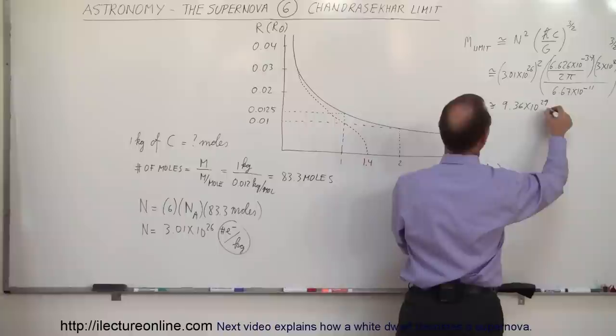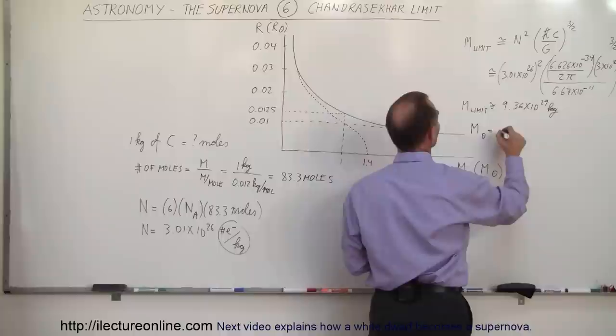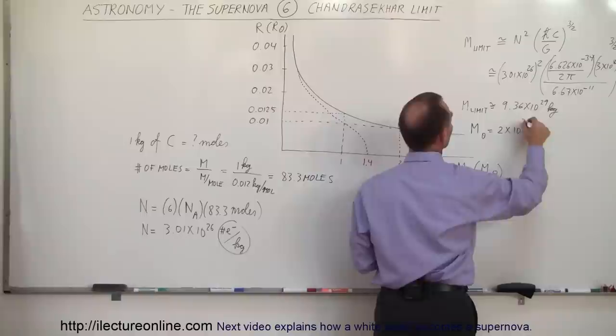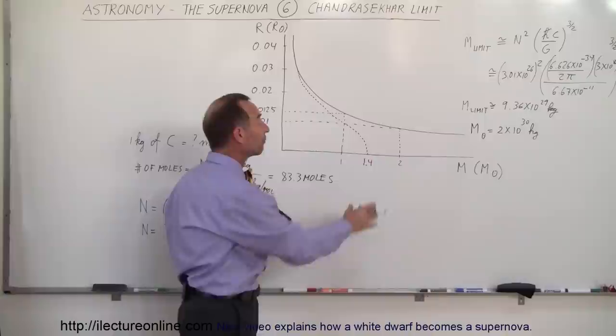Now if you compare that to the mass of the sun, the mass of the sun is equal to 2 times 10 to the 30th kilograms, so this was slightly over half the mass of the sun, not anywhere near yet the eventual number that they came up with.